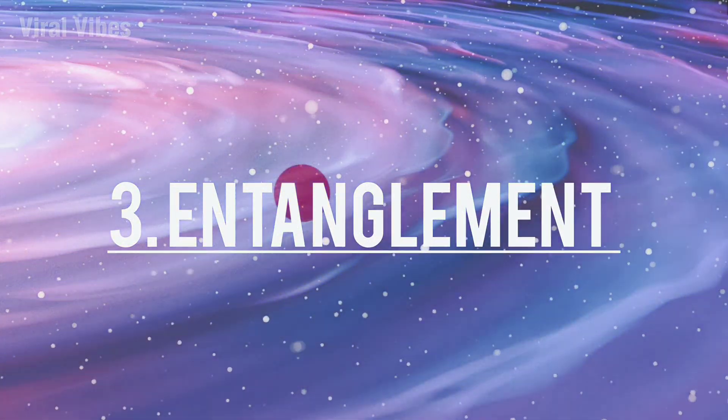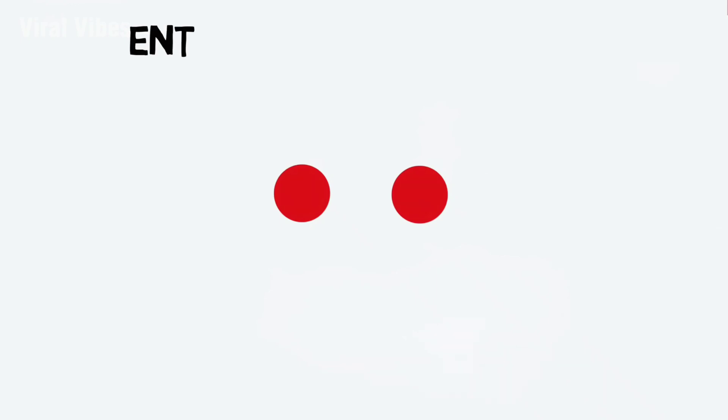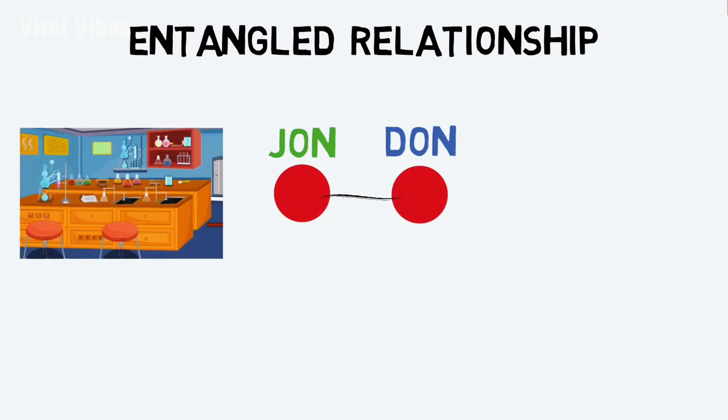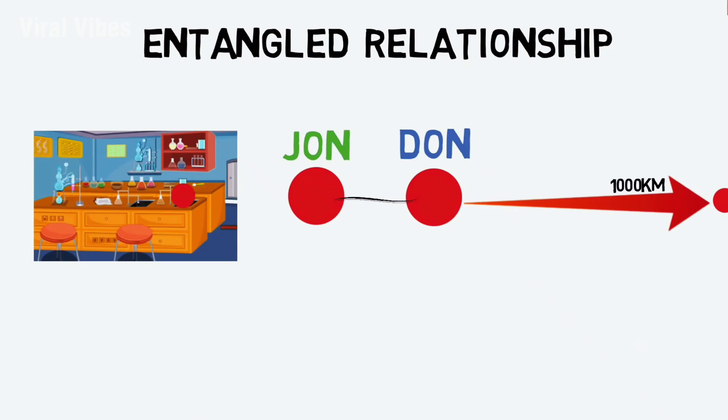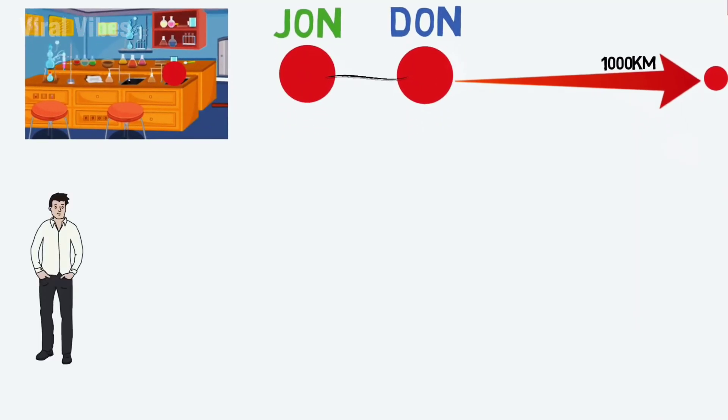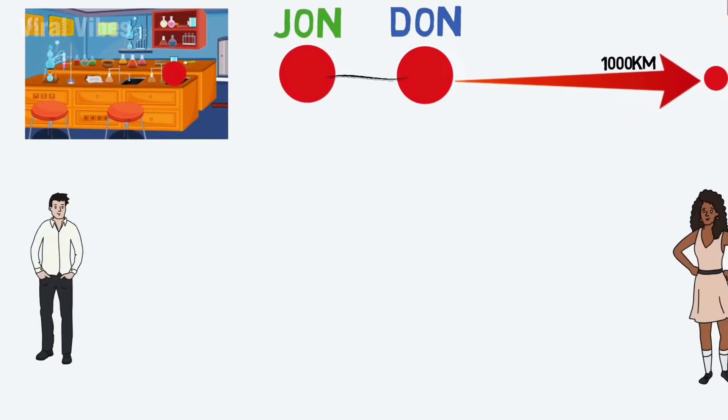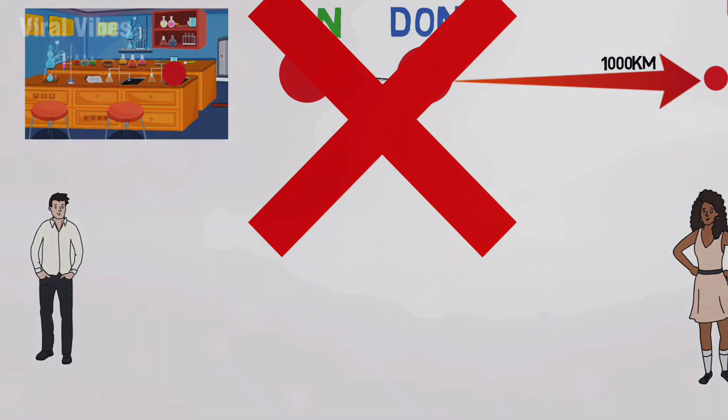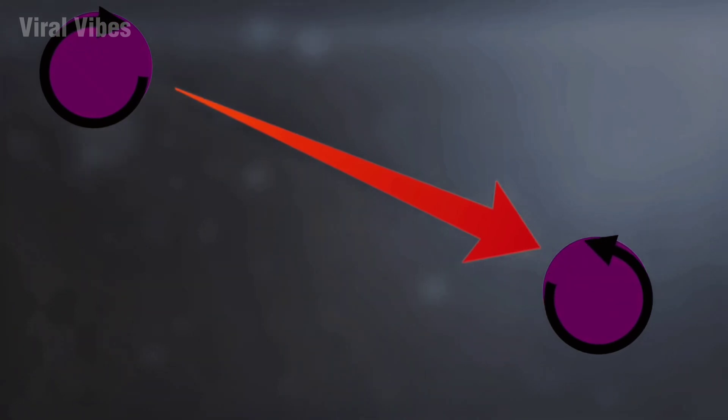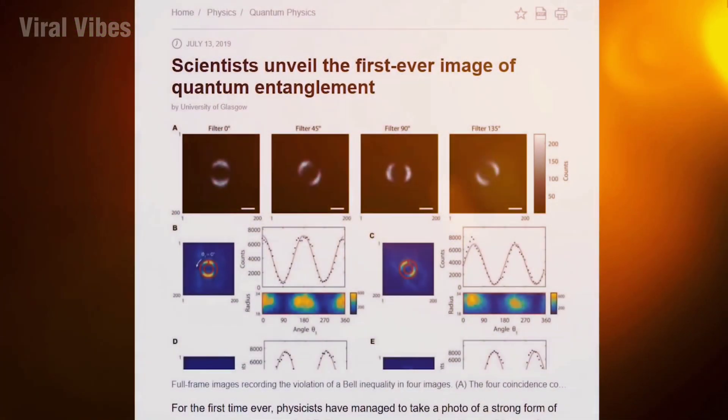Third, Entanglement. Imagine you have two special particles named John and Don. When they come into contact with each other, they become connected in a very strange and unique way. It's like they share a special bond. Now let's say you keep John with you and someone takes Don very far away, like 1,000 kilometers. Normally when things are far apart, they don't affect each other. But with these special particles, something extraordinary happens. If you do something to John, like making it spin in a certain direction, instantly Don, no matter how far away, will start spinning in the opposite direction. It's like they know what the other is doing without talking to each other. This is called quantum entanglement.